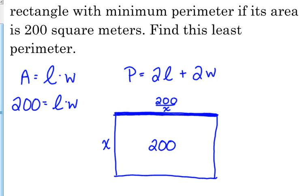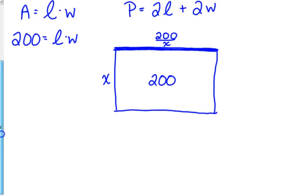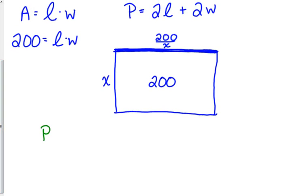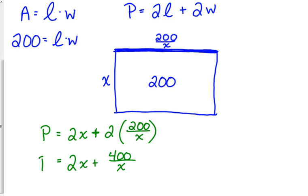We can substitute that. Now, we can rewrite our perimeter formula. Our perimeter is equal to 2 times X plus 2 times 200 over X. So that's also, if we multiply that, that is 400 over X. You only multiply the numerator. 2 times 200 is 400. So that is an equation for the perimeter of this rectangle.